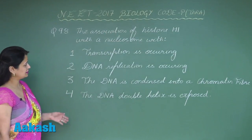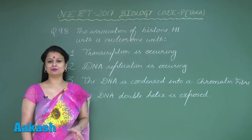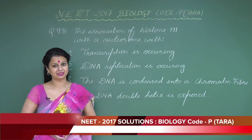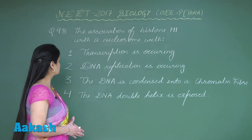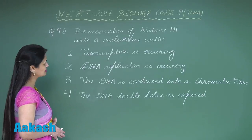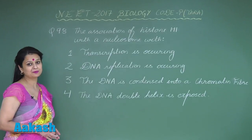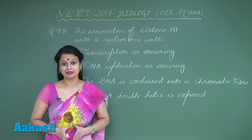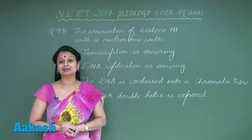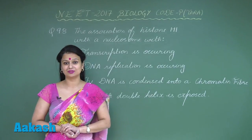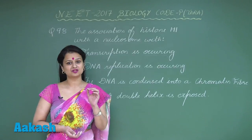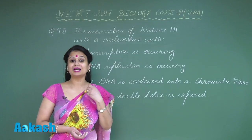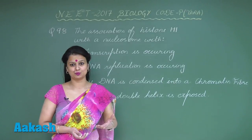Question number 98 is related to histone proteins. You know that histone proteins are involved in the coiling of DNA. Looking at option number one — transcription — transcription is a process in which DNA codes for RNA. For that, the DNA has to act like a template for the synthesis of RNA. Under such conditions, histone proteins must be removed so that the DNA helix is exposed.